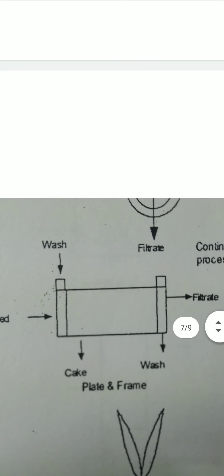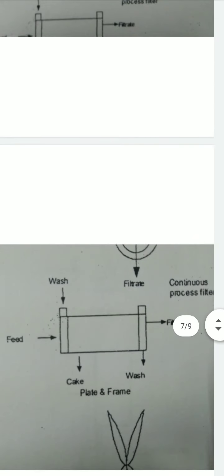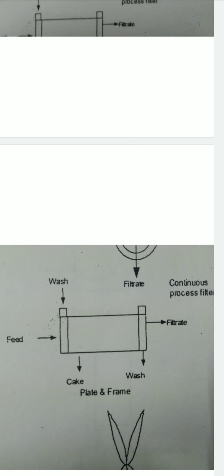Then we have the plate and frame filter. You can see feed, wash, filtrate, and cake — all these things are visible in this symbol. Feed enters from the cake side, filtrate exits from the other side, and washing is applied. All these elements can be seen in the plate and frame filter symbol.